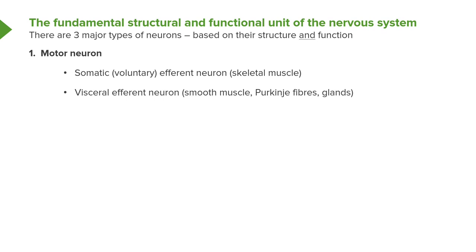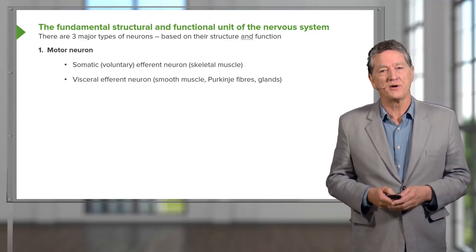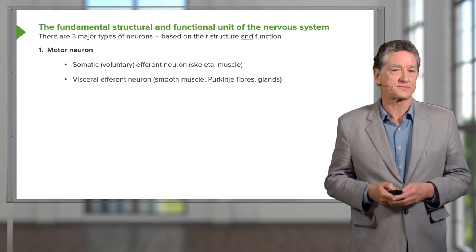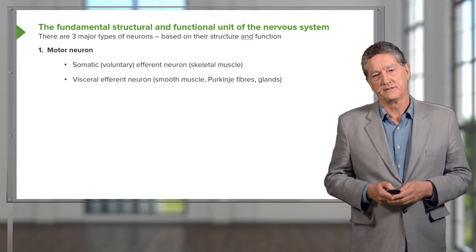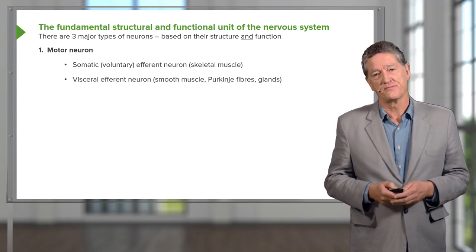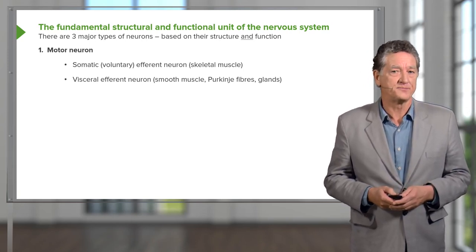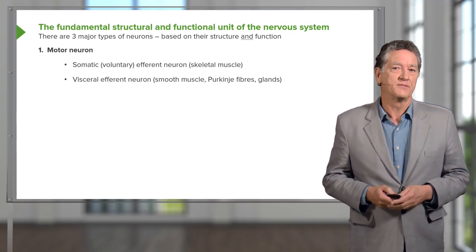Now that we know about the basic structural components of neurons, let's subdivide them into three different types. The motor neuron we looked at previously was a somatic neuron supplying skeletal muscles — it's voluntary and we're aware of it. The other type of motor neuron is the visceral neuron, which innervates smooth muscle as well as components of the heart, such as specialised Purkinje fibres that bring about an increase or decrease in heartbeat. These visceral neurons can also innervate glands and increase or decrease secretion rate.